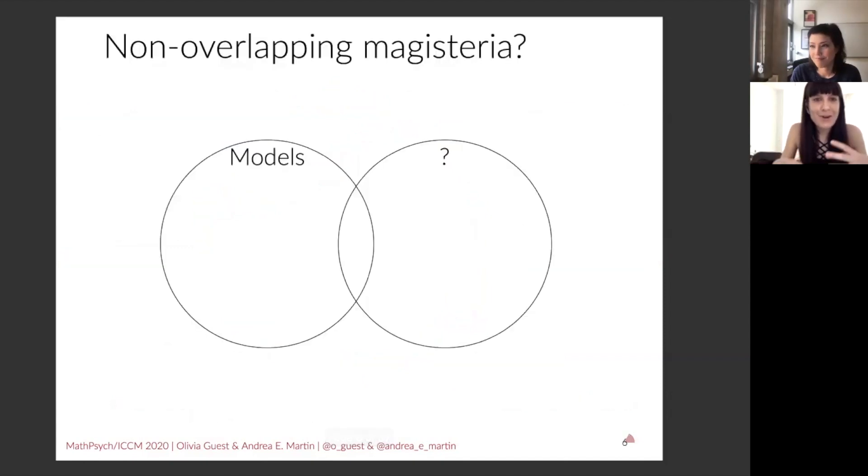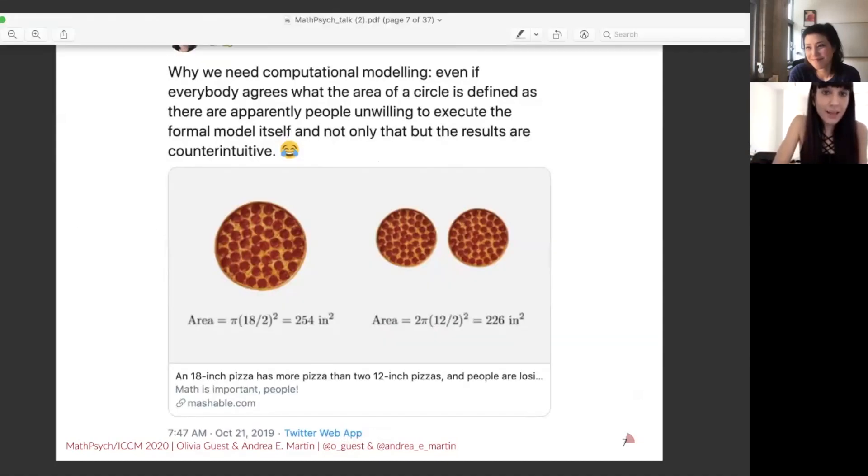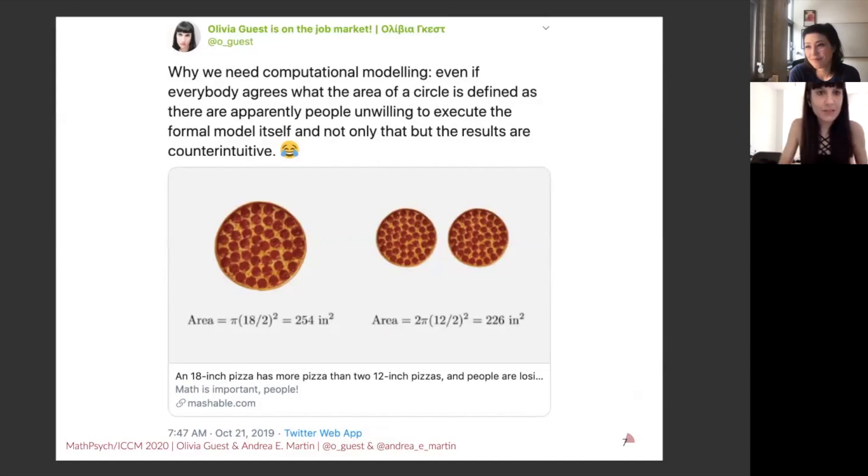Is it that there are some people that do modeling and then other people that do something else? So kind of like Stephen Jay Gould's idea of non-overlapping magisteria. So is computational modeling or formal modeling a different kind of science? Or is it that there's just something lacking in the broader dialogue between us and people who don't do any modeling? So here, I want to just give you an example of something that really hits home for me.